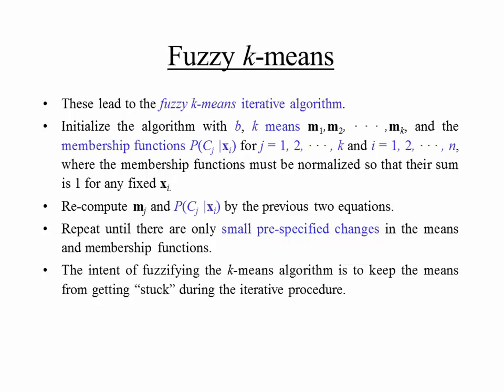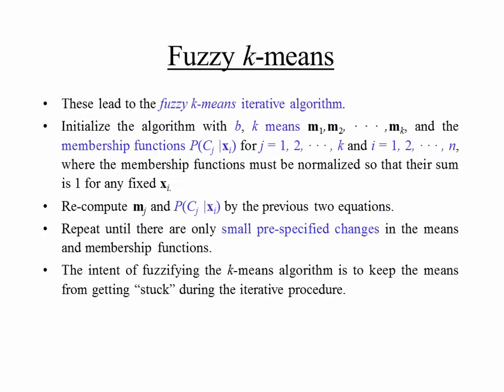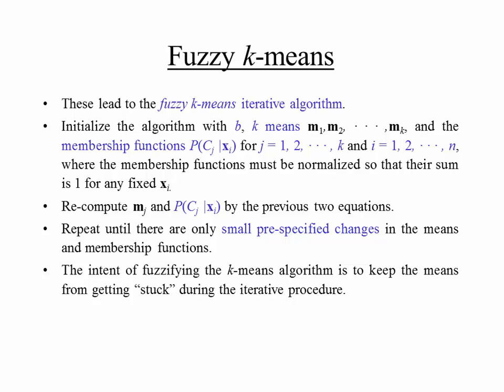The fuzzy K-means iterative algorithm initializes with parameter B, K means m1 through mk, and initial membership functions normalized to sum to one. Then recompute mj and the membership probabilities from the two update formulas, repeating until only small pre-specified changes occur in the means and membership functions. The intent of fuzzifying K-means is to keep the means from getting stuck during iteration. Once converged, the final partitioning is based on the Voronoi diagram of the resulting means.